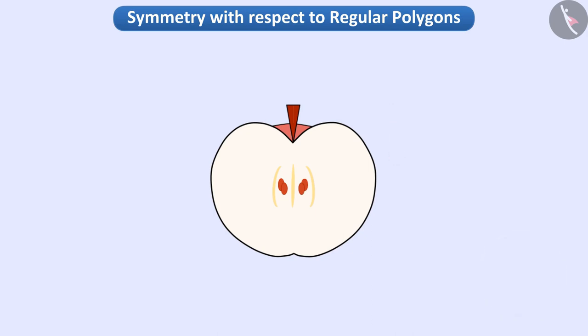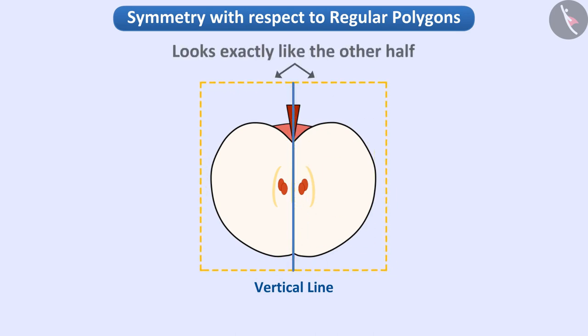Exactly. By drawing a vertical line going through from the middle of it, we see that the parts on both the sides of this line look exactly like the other half. They are mirror reflections of each other. Such a shape is called a symmetric figure.